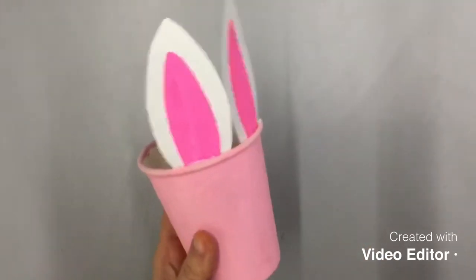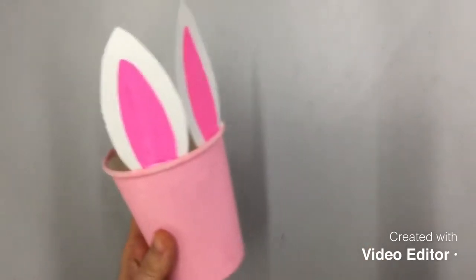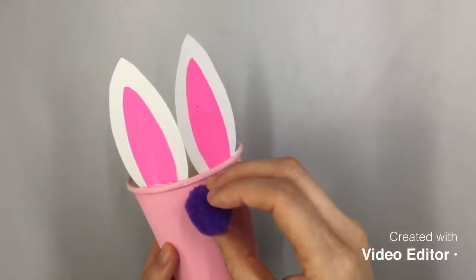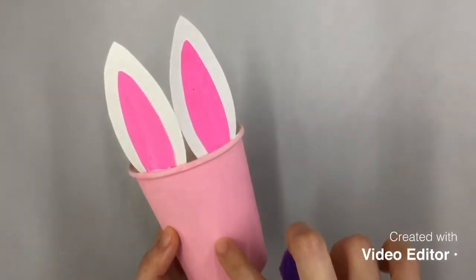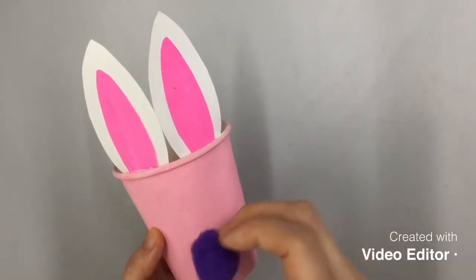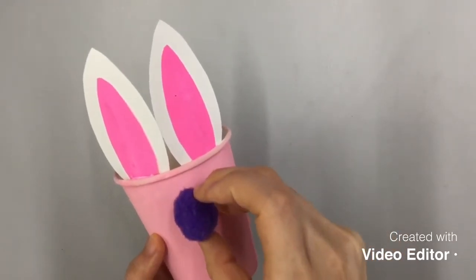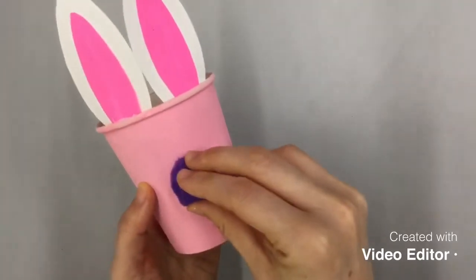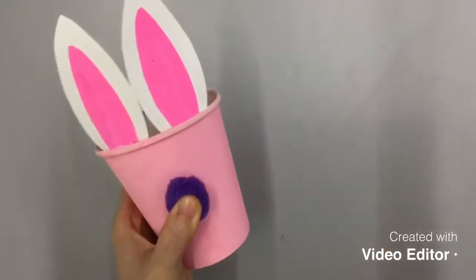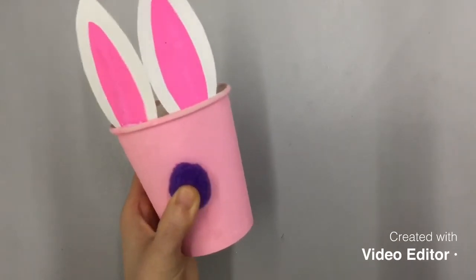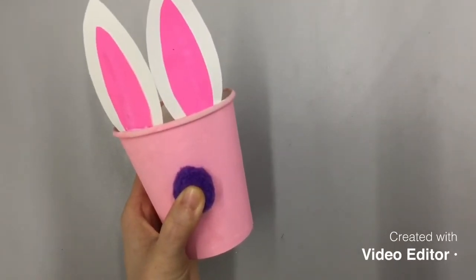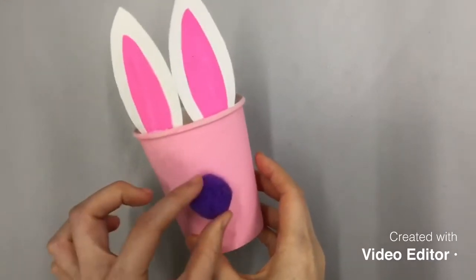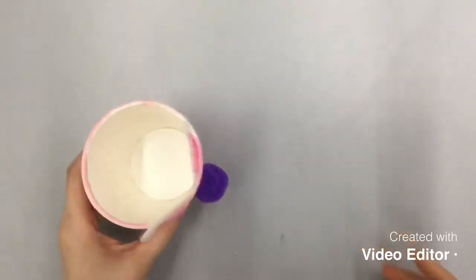Let's give our bunny a cute little pom-pom nose. Put some glue on the pom-pom and draw imagination line down between the ears. And place it not too high or not too low, just around the middle. Then press it for a while until it is securely stuck on the cup. Done with the nose. And I see my bunny is getting cuter and cuter.